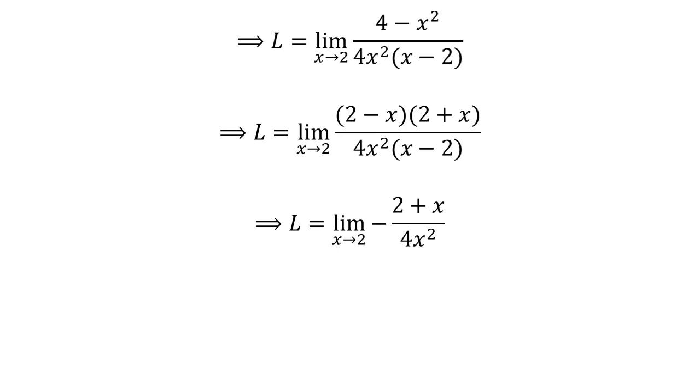Now let us cancel out the common factor 2 minus x in the numerator and x minus 2 in the denominator. So the limit becomes L is equal to limit of minus 2 plus x upon 4 times square of x as x approaches 2.